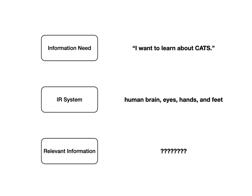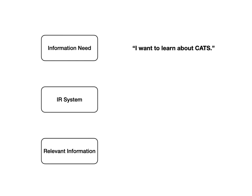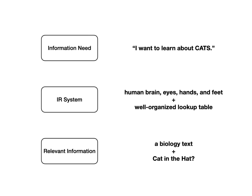Instead, let's do the same task. What if we had at our disposal the Dewey Decimal System for this big old set of books? We still have the same information need — I want to learn about cats — but we have this system in place that says there is a method through which you can access this information. Now we still have our human brain, eyes, hands, and feet, but we also have this well-organized lookup table. Now we can find all kinds of interesting stuff — children's literature, biology textbooks — and actually start satisfying our information need.